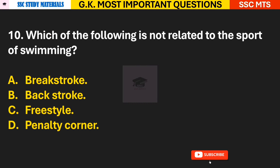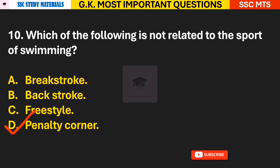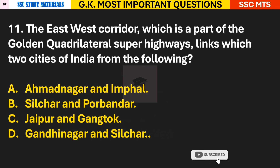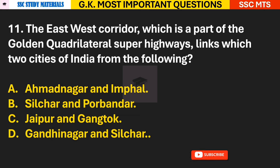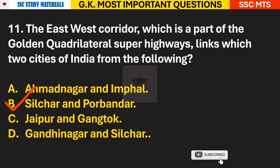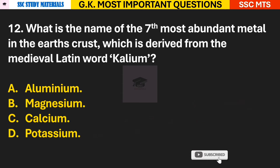Question 10: Which of the following is not related to the sport of swimming? Answer D — penalty corner. Question 11: The East-West Corridor, which is part of the Golden Quadrilateral Super Highways, links which two cities of India? Answer B — Silchar and Porbandar.